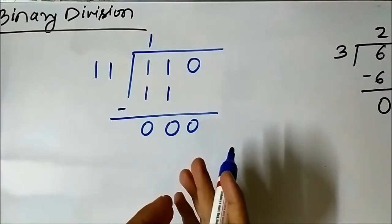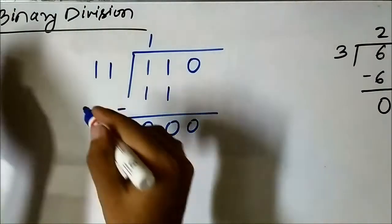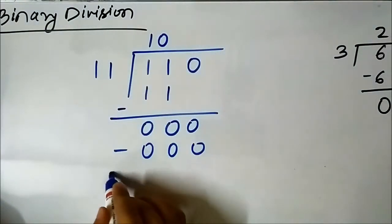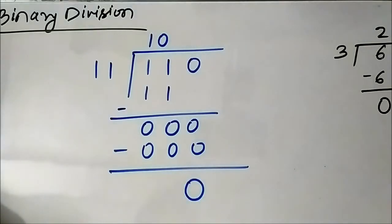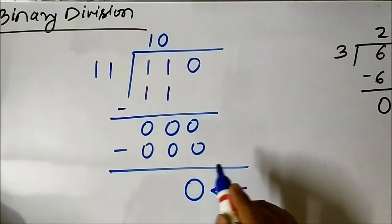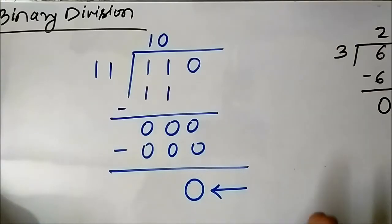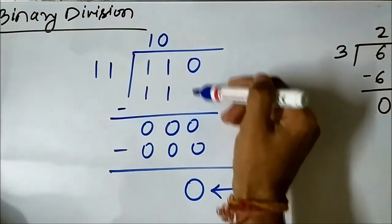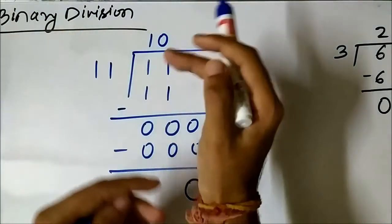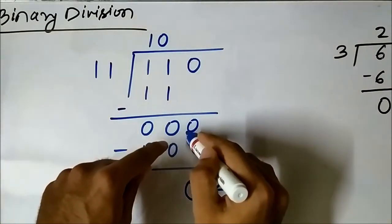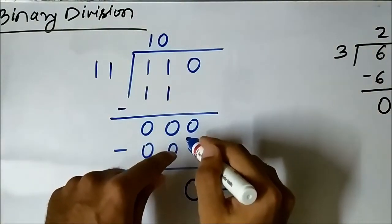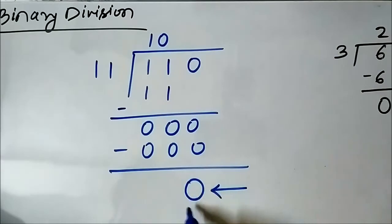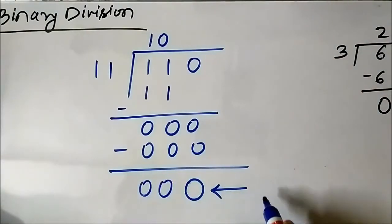1 1 into 1 gives 1 1; subtract and it becomes 0 0. Now do not end the operation here — we have to bring down the next bit, which is 0, and subtract it to get the final result. A common mistake is to terminate the operation when you get 0, but the remaining bits still have to go through the division process.